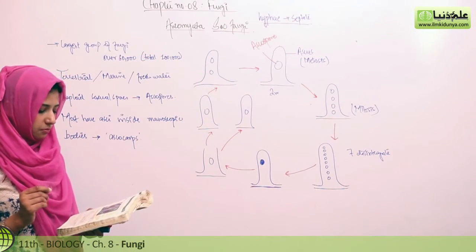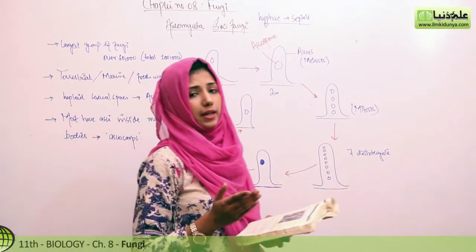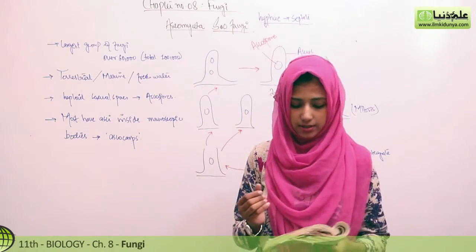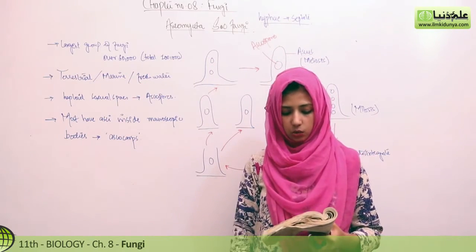From a reproduction point of view, there is sexual and asexual reproduction. Asexually, it reproduces by budding.